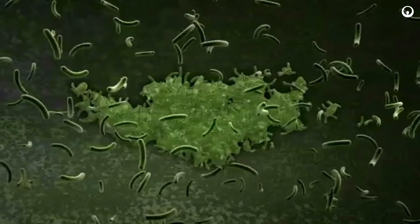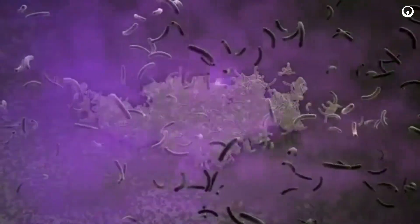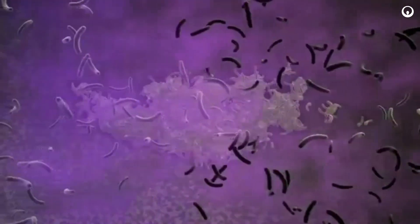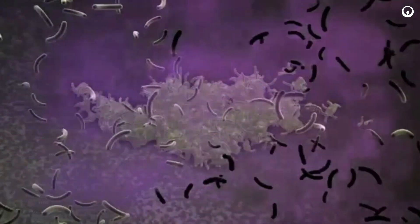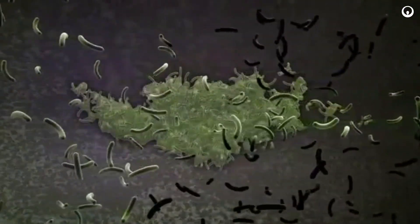Traditional biocides, represented here in purple, are often used in an attempt to reduce the growth of biofilms. They're effective on free-floating microbes in the bulk water, but are less effective against microbes that are protected within the biofilm.